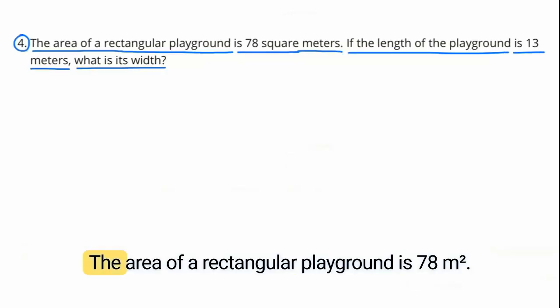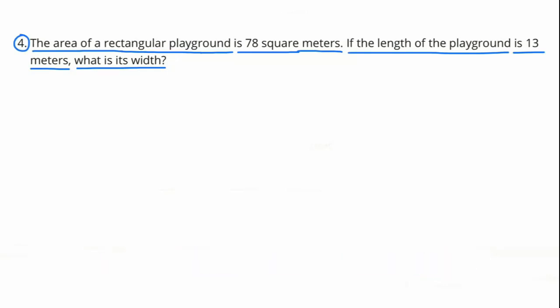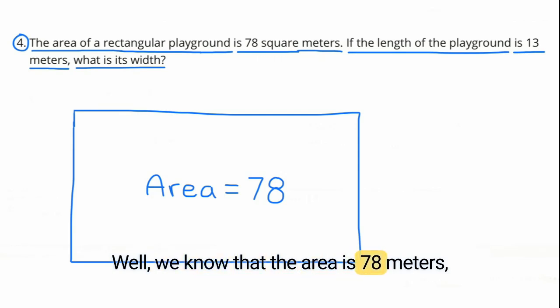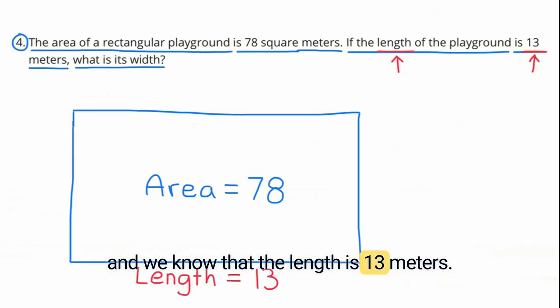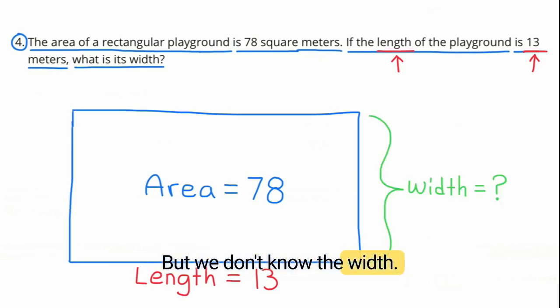Number 4. The area of a rectangular playground is 78 square meters. If the length of the playground is 13 meters, what is the width? Well, we know that the area is 78 meters and we know that the length is 13 meters, but we don't know the width.